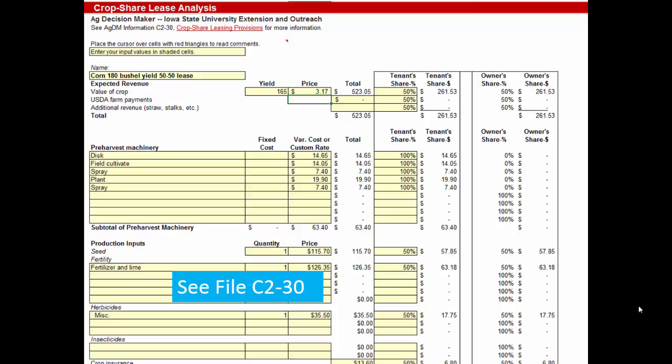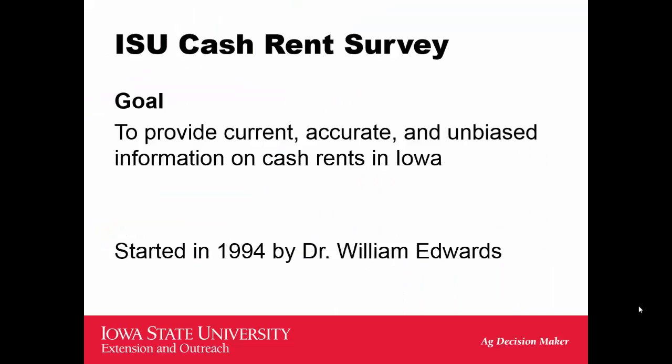We came out with a new spreadsheet, C2-30. It helps you take a look at a crop share lease analysis. You can go in and fill in all the yellow boxes, and it will generate a report that looks at how the inputs are shared, how the outputs — basically bushels — are shared, along with government payments and crop insurance, and help you determine if that's something you want to look at. Crop share lease is not for everybody, but it's an opportunity.